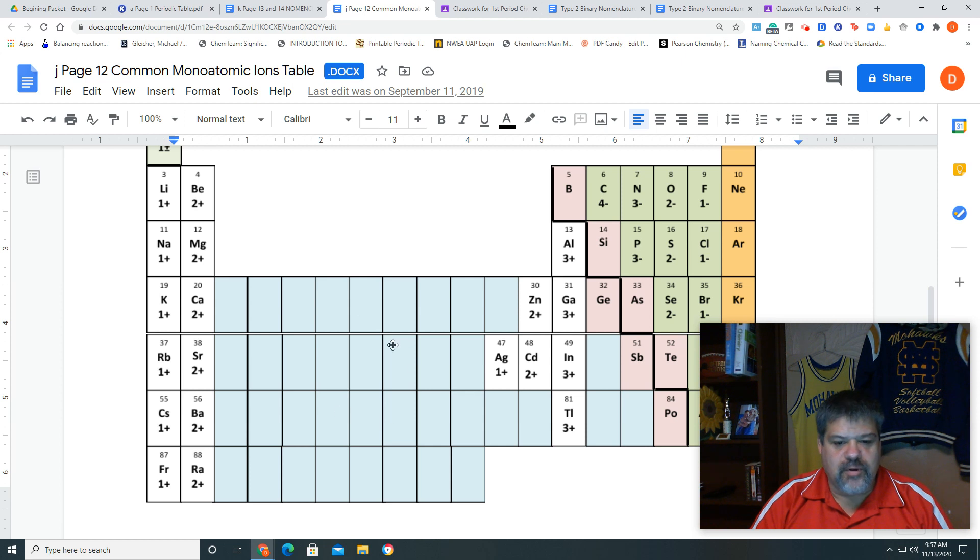And this blue, remember, if the metal is in blue, it's a Type 2 binary or ionic compound. So Type 2 just means that we don't know what the charge is off the bat, so let's go back to the question.